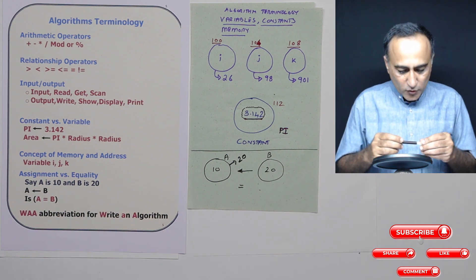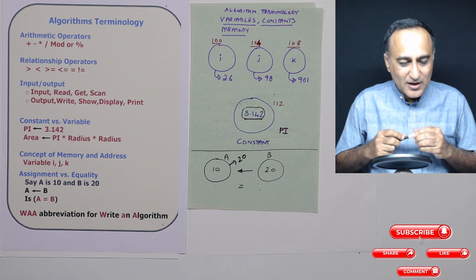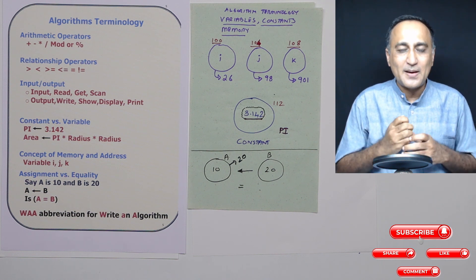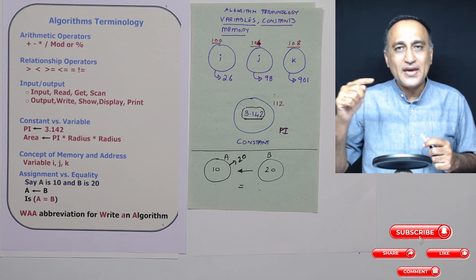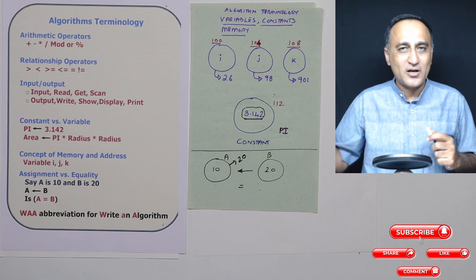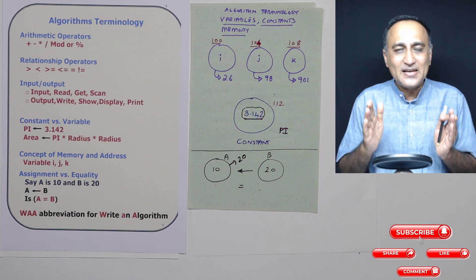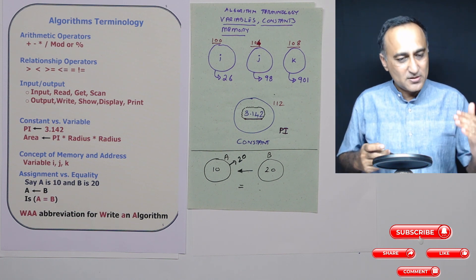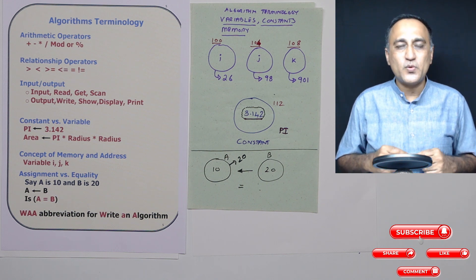One more thing: I'm not going to state for every problem 'write an algorithm.' I'm going to simply say WAA. Find the sum of two numbers - WAA. Determine if an input year is a leap year or not - WAA. WAA stands for write an algorithm. So with this, I think we are good to start with algorithms.